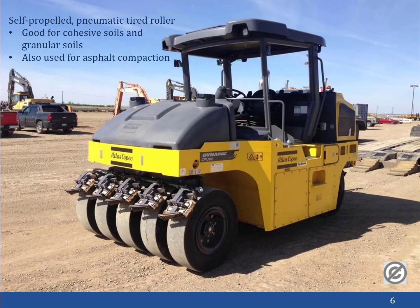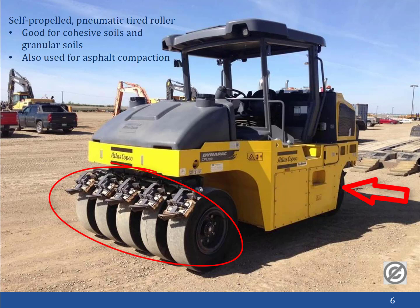This is a photo of a self-propelled pneumatic tired roller. You can see a row of five smooth tires on the front and four similar tires on the back, placed in the spaces between the front tires. This compactor uses primarily pressure to compact the soil. The offset tires provide some manipulation, though much less than a footed roller. It can be used for both cohesive and granular soils, though it's not very effective for highly plastic clay soils. It is also used for compacting hot-mix asphalt.